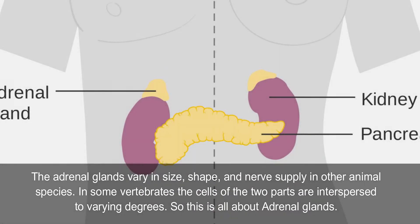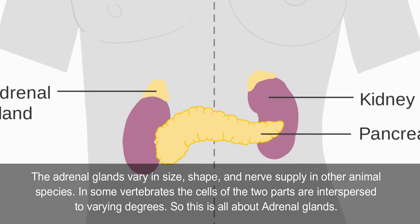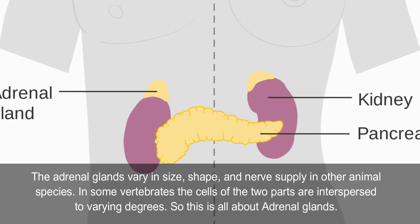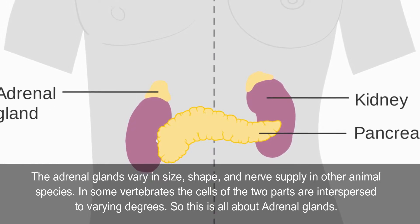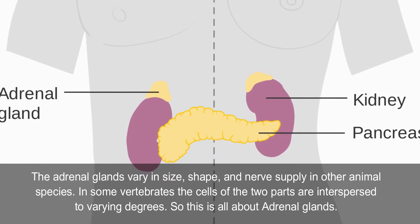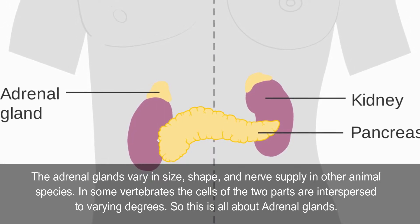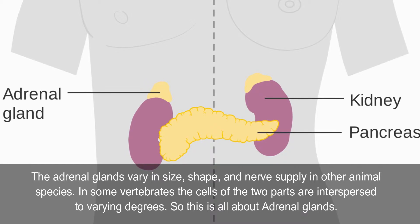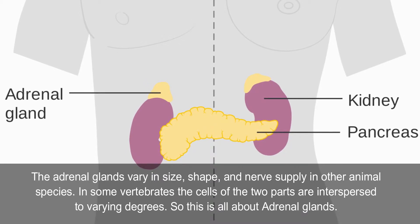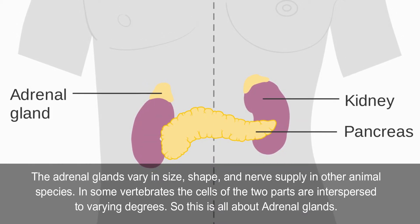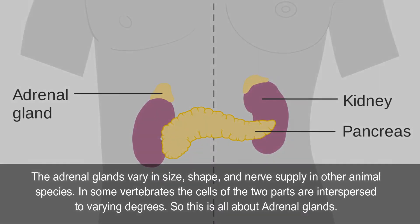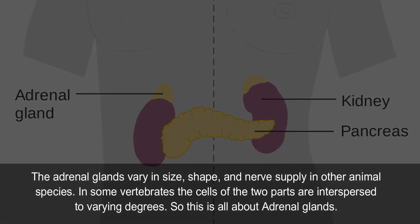The adrenal glands vary in size, shape, and nerve supply in other animal species. In some vertebrates, the cells of the two parts are interspersed to varying degrees. This is all about adrenal glands.